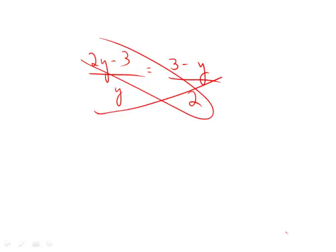Okay, we have here 2y minus 3 over y is equal to 3 minus y over 2. Solve this. How do we solve this? We're going to cross multiply.